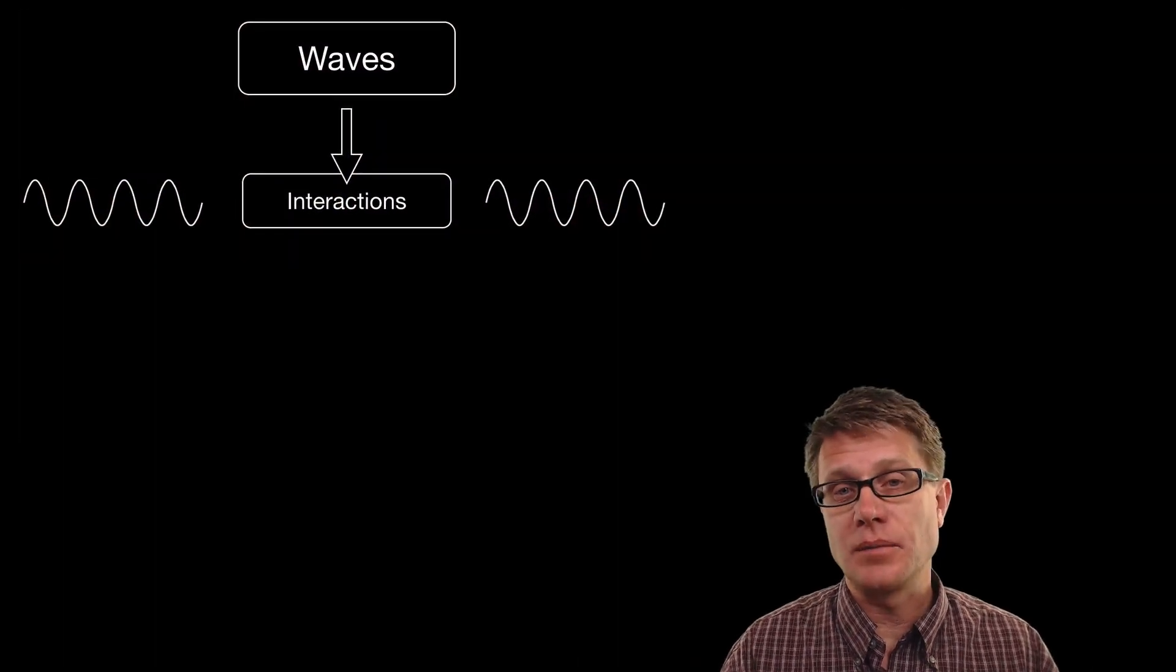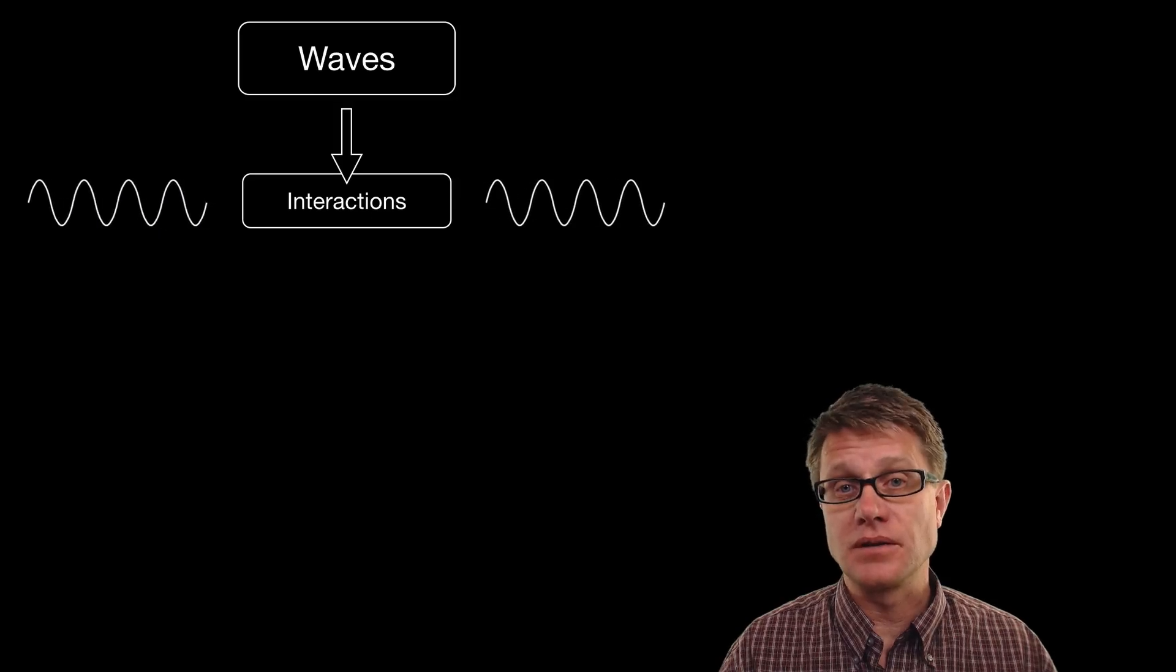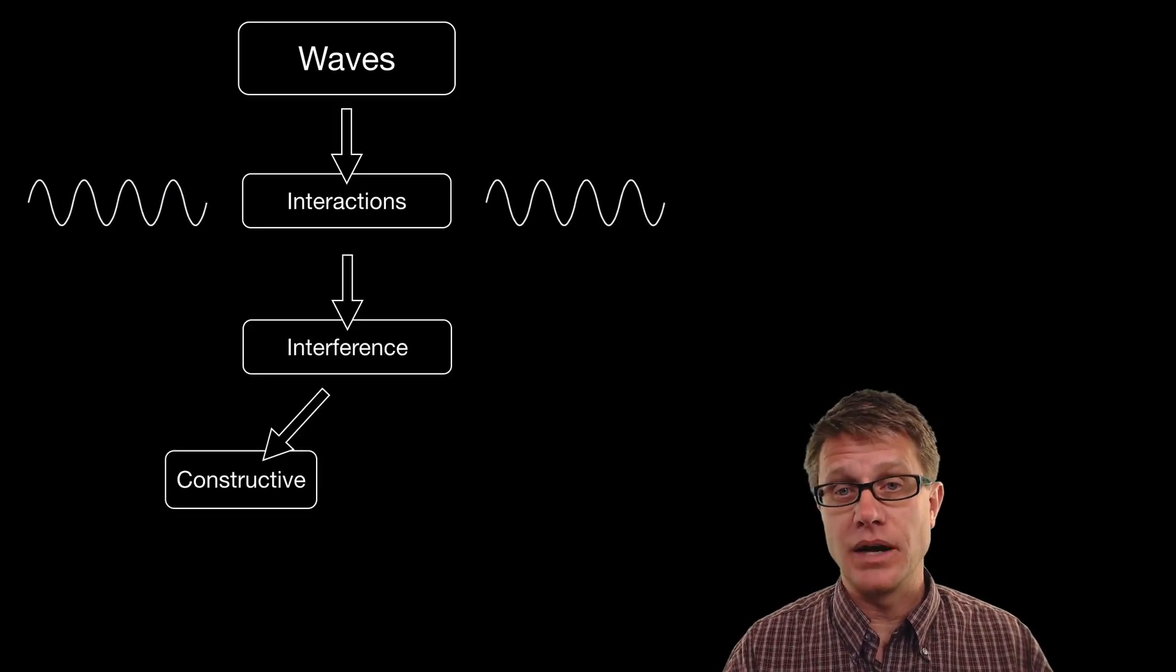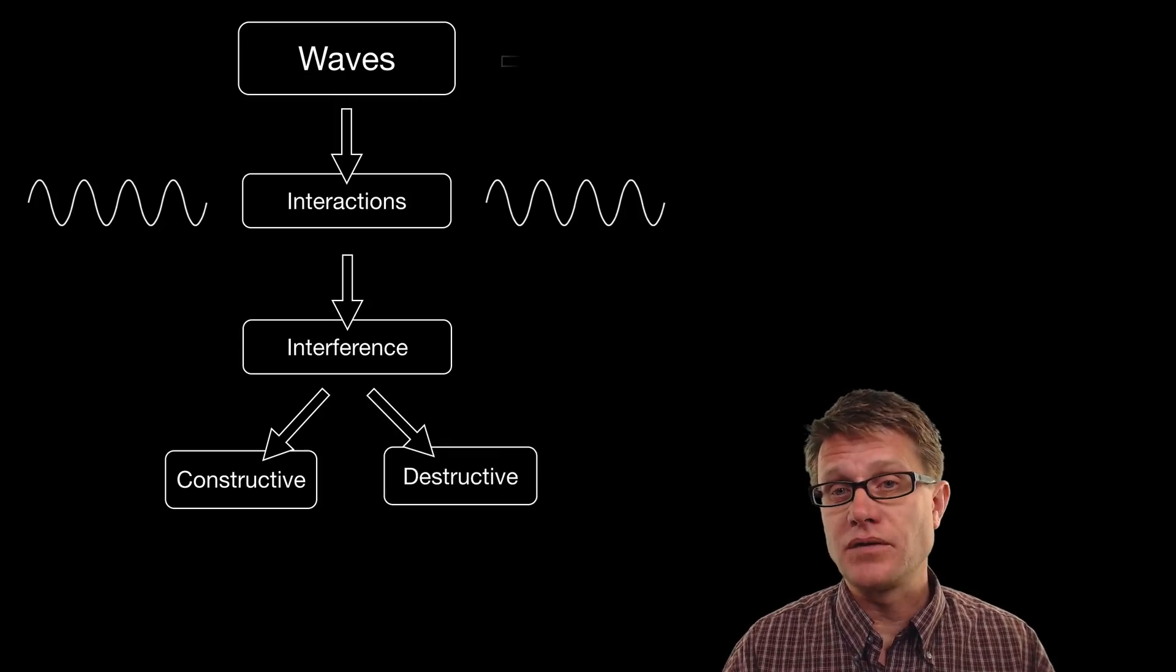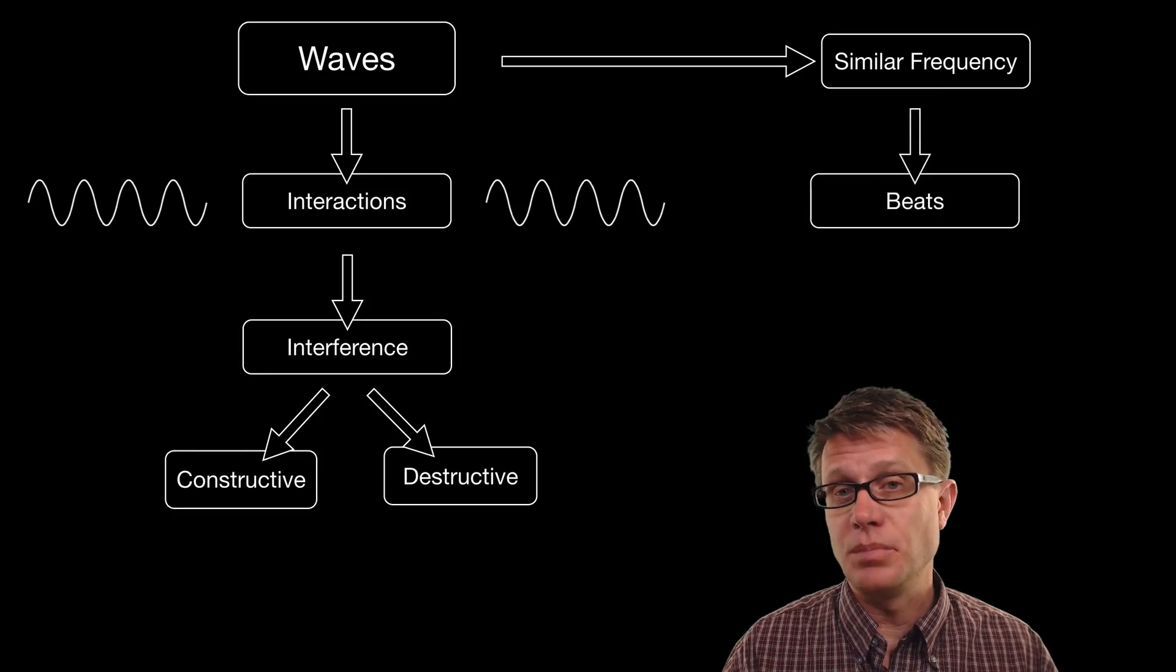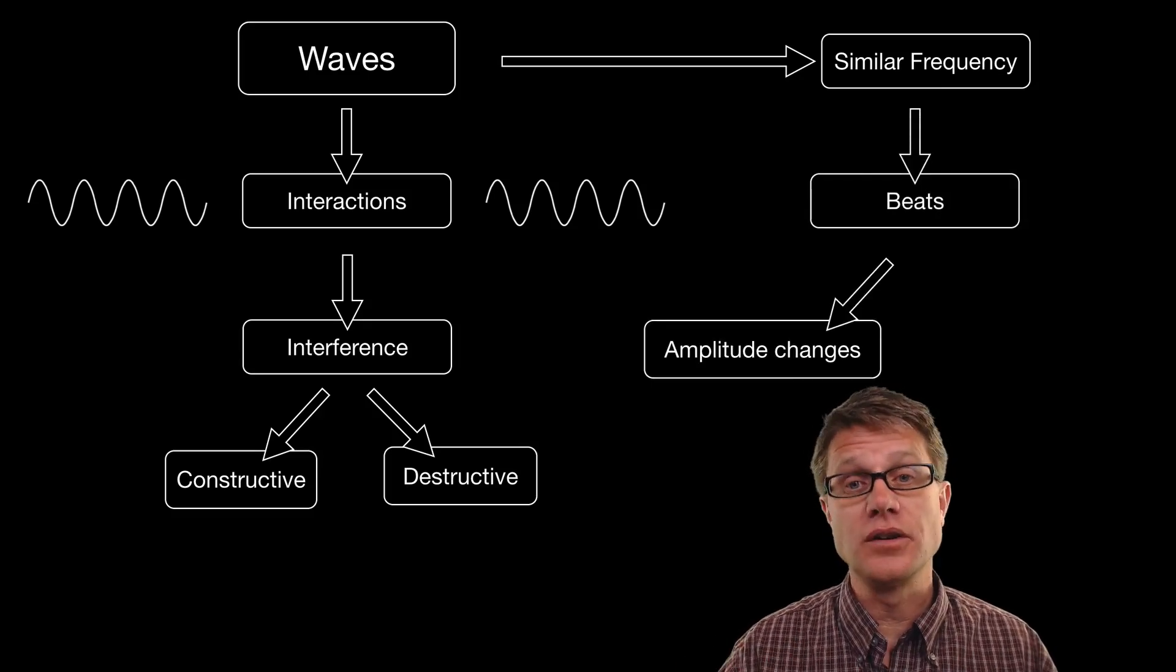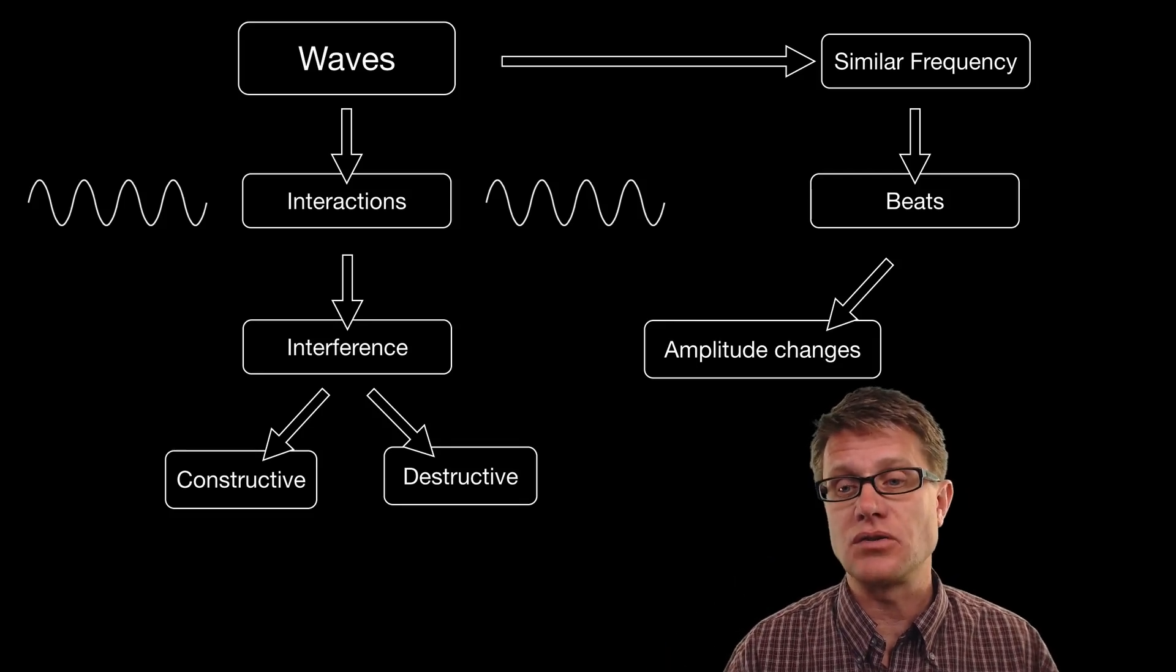And so waves when they come together will interact, and as they interact they cause interference. Now that interference can be constructive, sometimes building up the wave or the summation of the waves. And sometimes it is destructive, tearing it down. But if those waves are very similar in frequency, what you get are these beats. And beats are going to be amplitude changes. In other words, the volume is going to go up and down and up and down and up and down, due to this constructive and destructive interference.